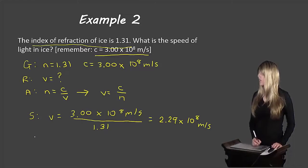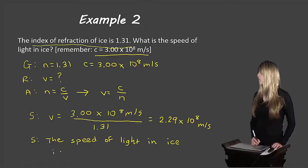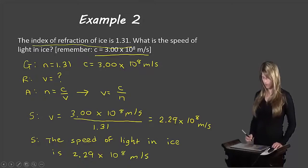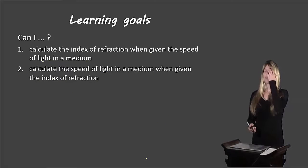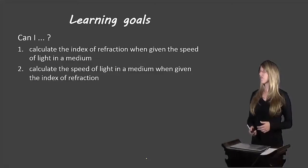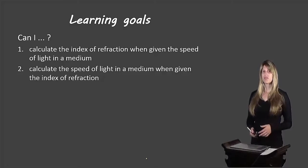And so now we can write a sentence: the speed of light in ice is 2.29 times 10 to the 8 meters per second. So that's how we would do a problem like that. So let's take another look at our learning goals: you should be able to calculate the index of refraction when given the speed of light in a medium, and you should be able to calculate the speed of light in a medium when given the index of refraction.